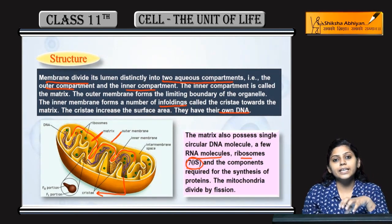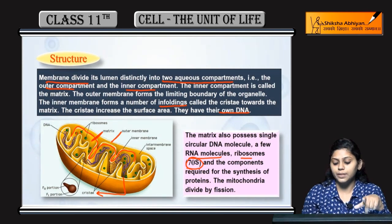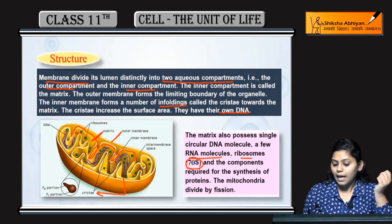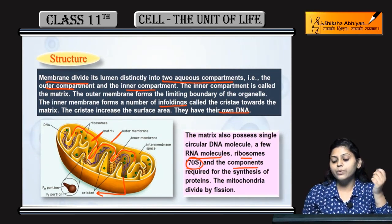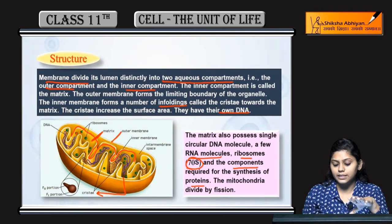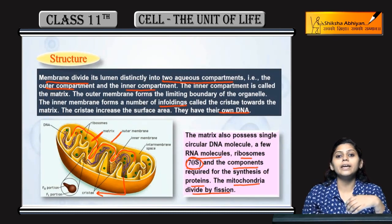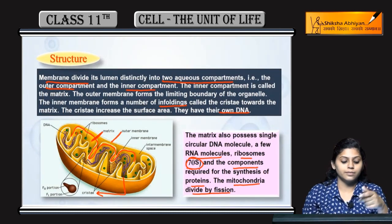Isme ribosomes bhi present hota hai jo ki 70S type ke hote hai. 70S type of ribosomes mainly prokaryotes mein hota hai. And component required for the synthesis of proteins - ribosomes bhi kya karti hai, protein synthesis karti hai. Mitochondria ke division hota hai by fission.